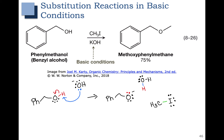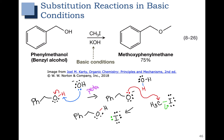Now we can show our substrate coming in to do an SN2 reaction and kick out that I minus. To recap: in the first step we did a proton transfer, and then that created a better nucleophile to do our SN2 substitution reaction. We couldn't do the SN2 reaction step first because that would have created a strong acid, which wouldn't make any sense in our basic reaction conditions.